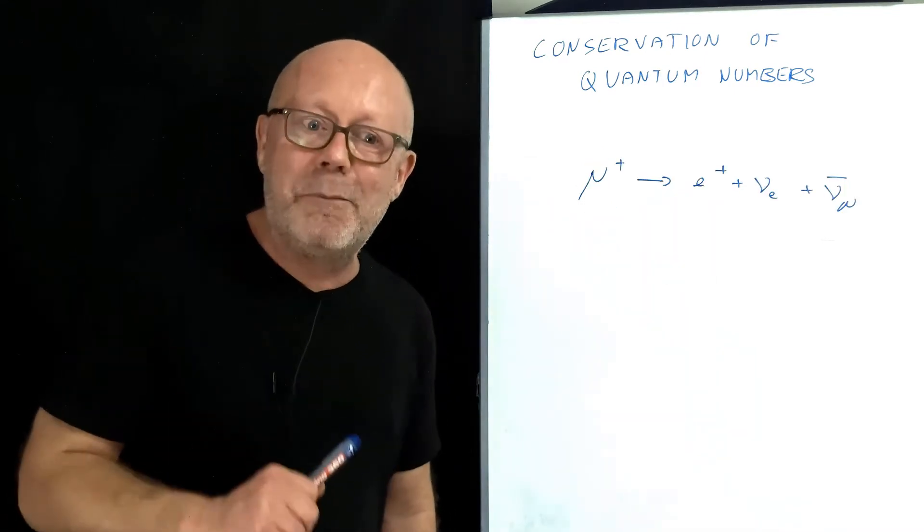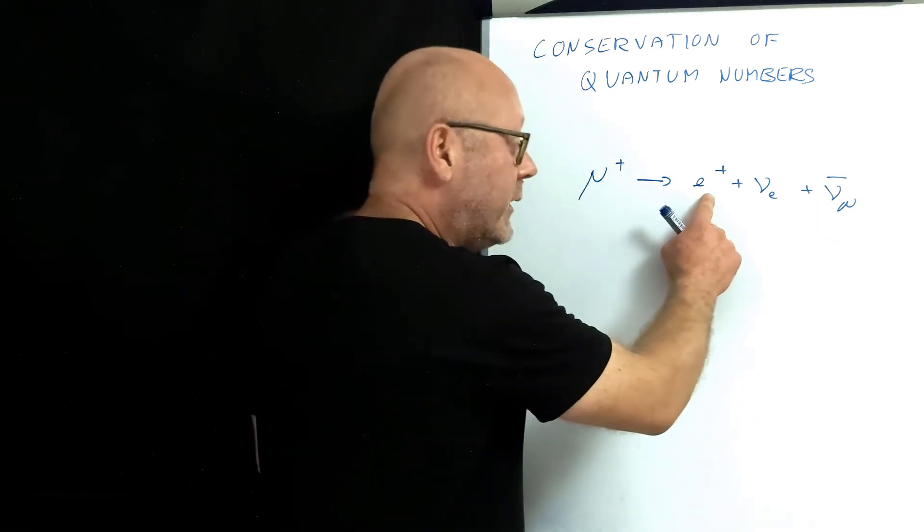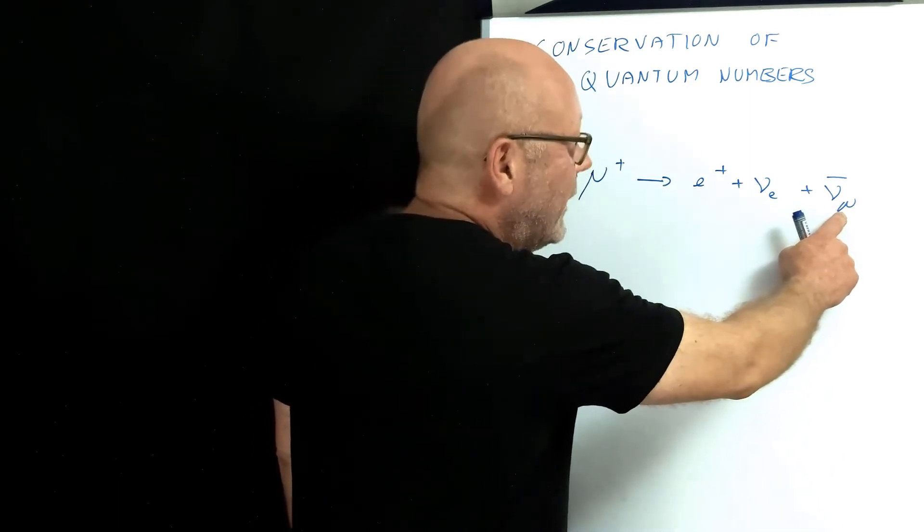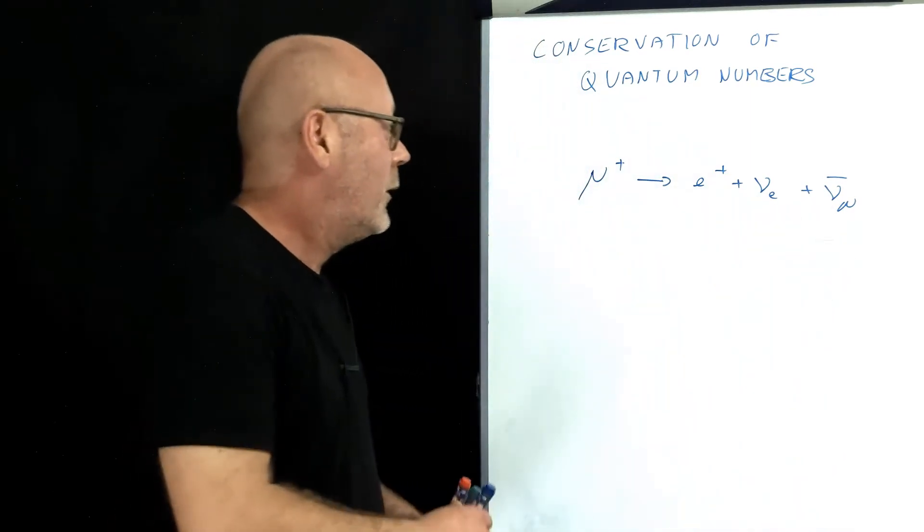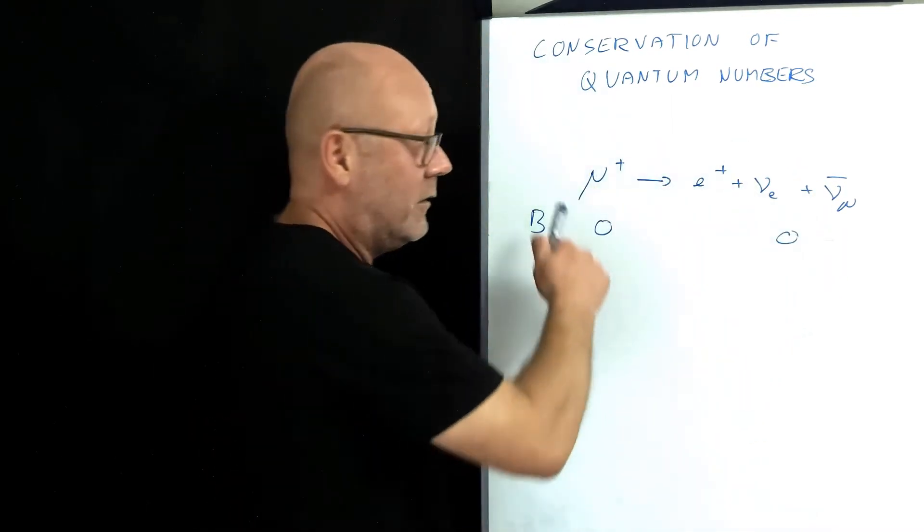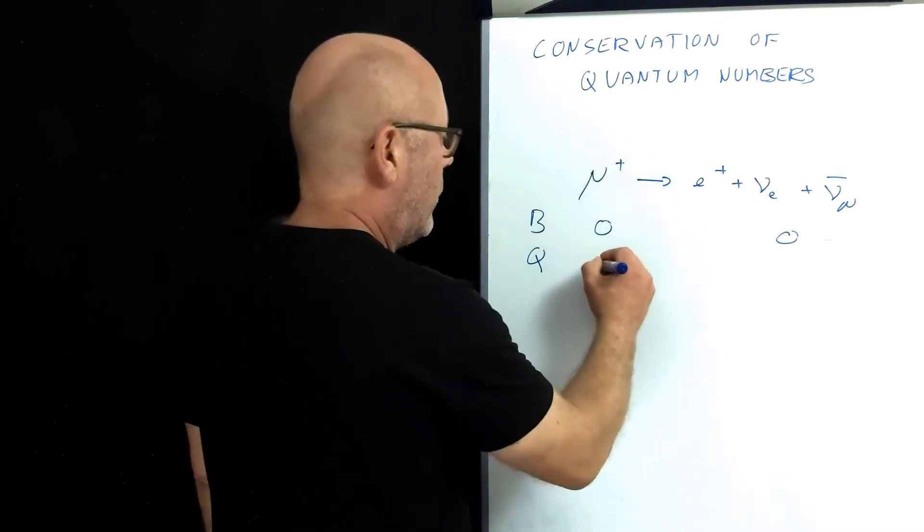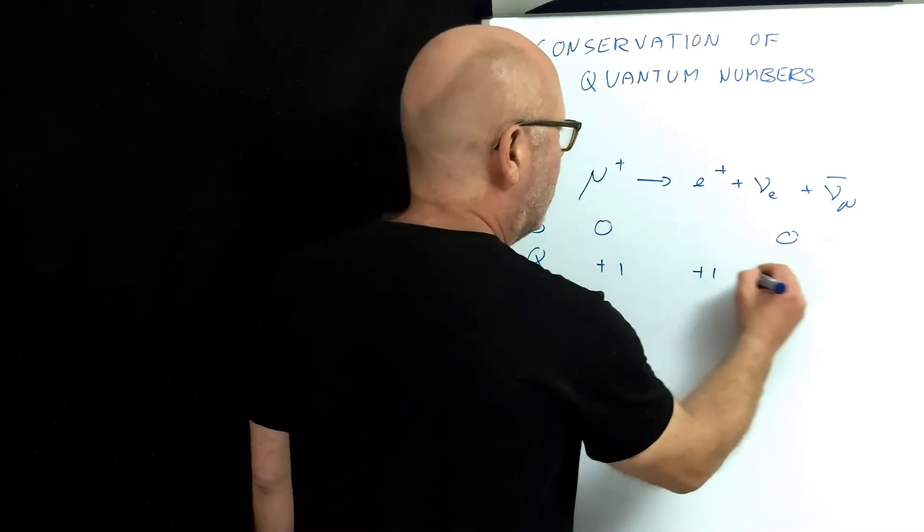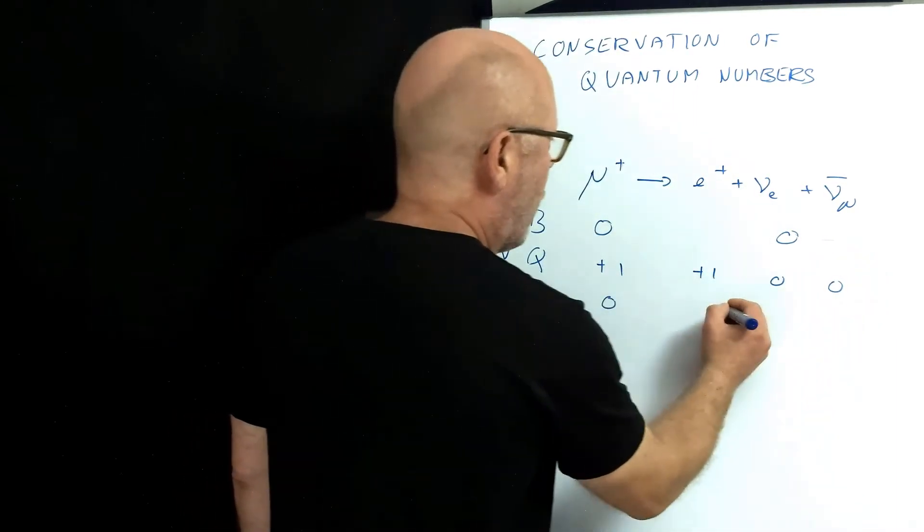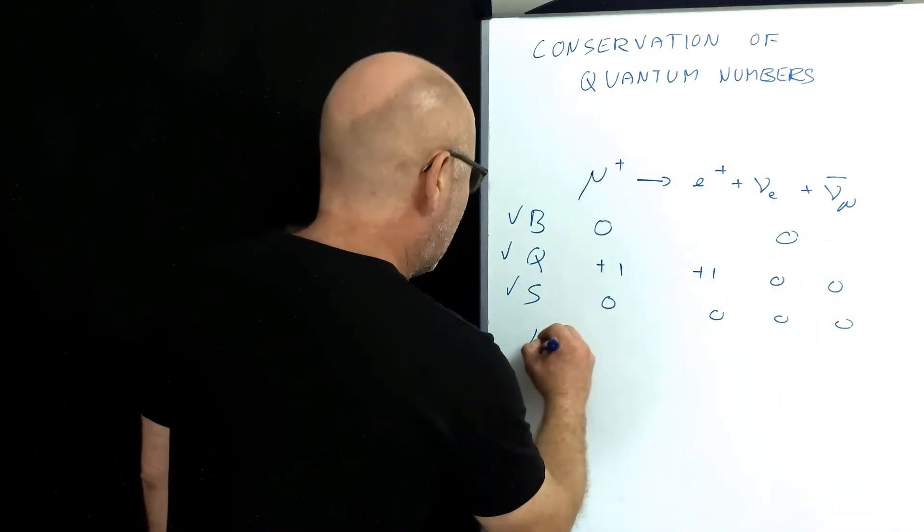Let's play with leptons now. We have this anti-muon, that decays into an anti-electron, plus electronic neutrino, and a muonic anti-neutrino. Baryon number, well, we know it's going to be zero and zero, because there's no baryon involved. Charge! Plus one, plus one, zero, zero. Check! Strangeness. There's no quarks involved, so there won't be any strange.